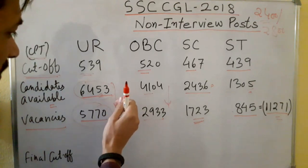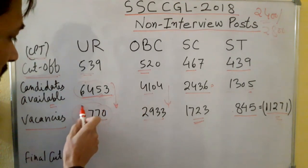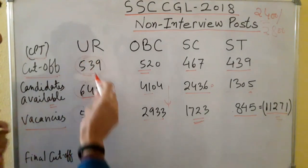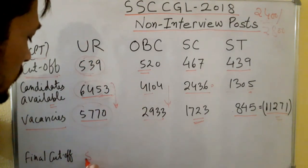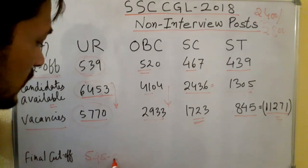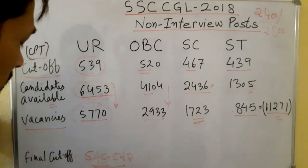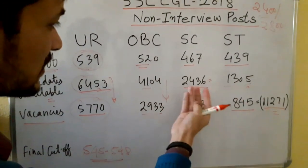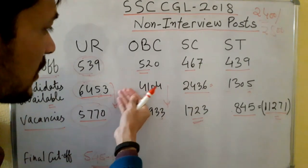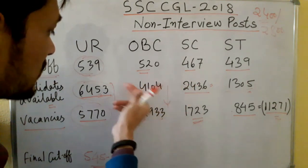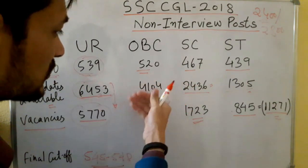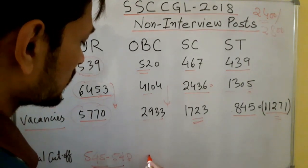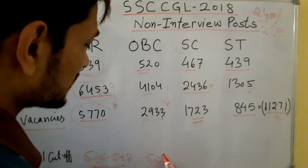If 700-800 candidates skip, then almost the same number as vacancies will appear in document verification, so the cut-off is not going to go very high. The expected final cut-off for UR in non-interview post will be around 545 to 548 — that will be the final cut-off. As far as OBC is concerned, the same story applies, because OBC and SC candidates who qualify in the UR category also take posts there, so OBC cut-off will increase only nominally from the CPT cut-off of 520, staying around 525.